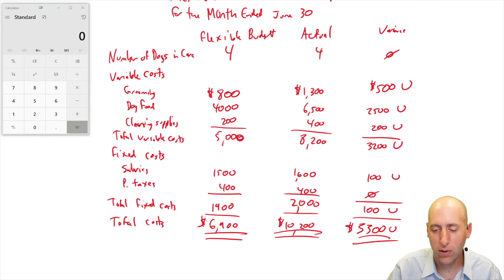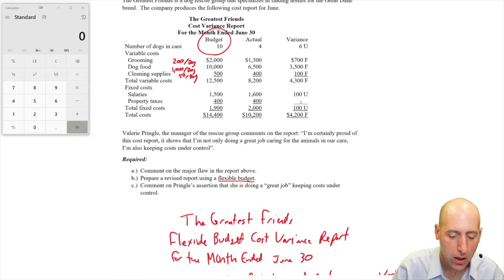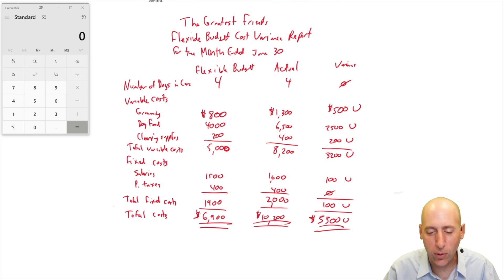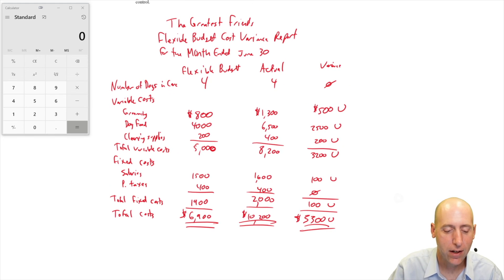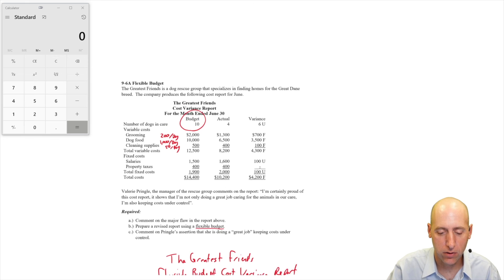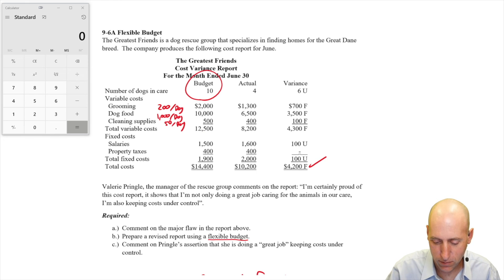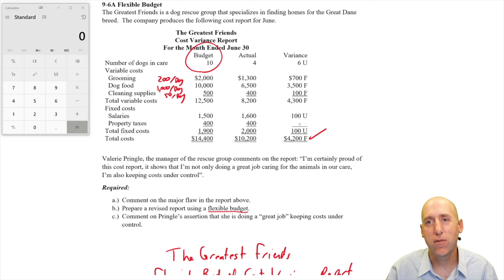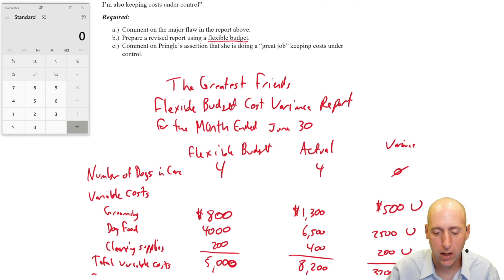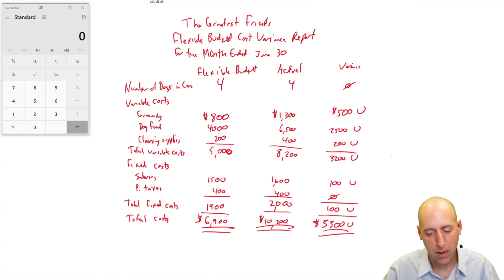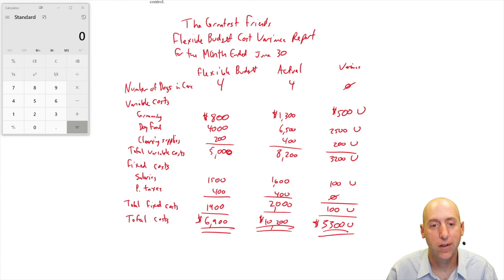Comment on Pringle's assertion that she is doing a great job keeping costs under control. She's absolutely not doing a great job keeping costs under control. Again, we spent $6,500 on dog food for four dogs. It should only cost $1,000 a dog. That seems expensive anyway, but it should only cost $1,000 a dog. This is a bad news report for old Valerie Pringle. Too bad. She looked at this report and thought, oh, I'm very favorable. It turns out when you have so many fewer dogs than you were planning, of course you're going to look good. But this flexible budget sort of reveals that maybe she didn't do a good job keeping costs under control.